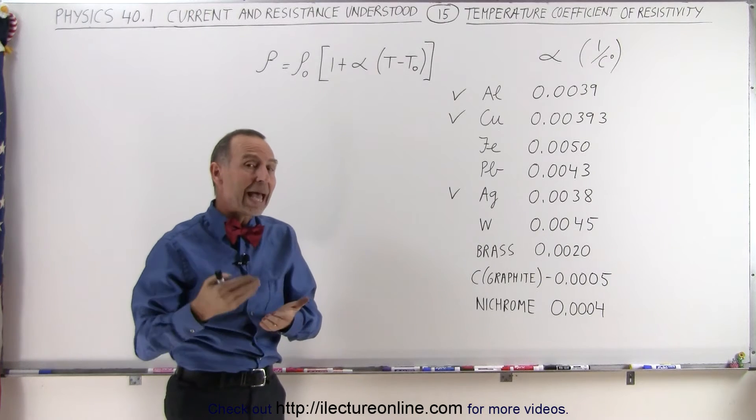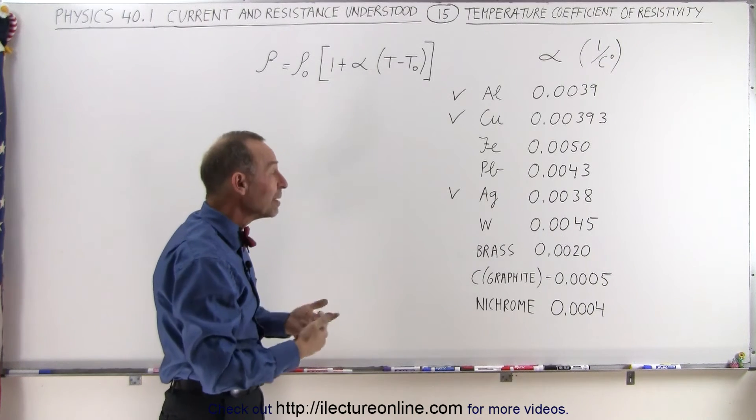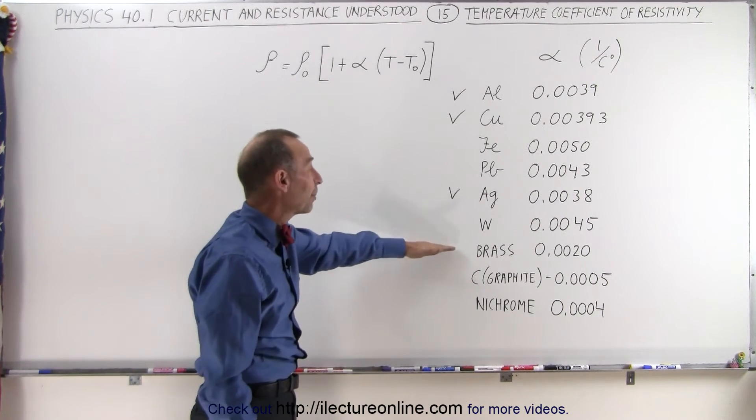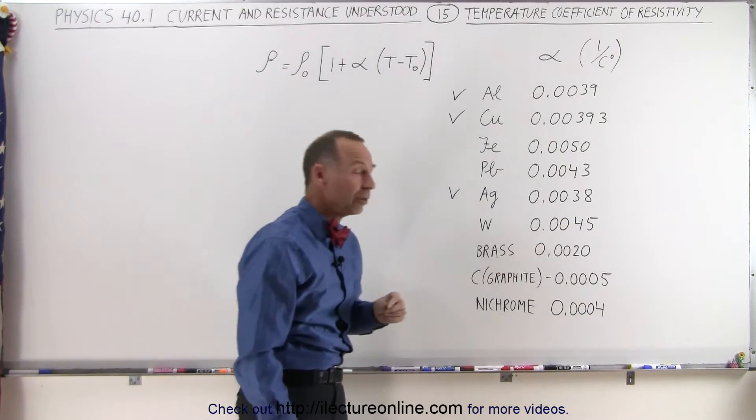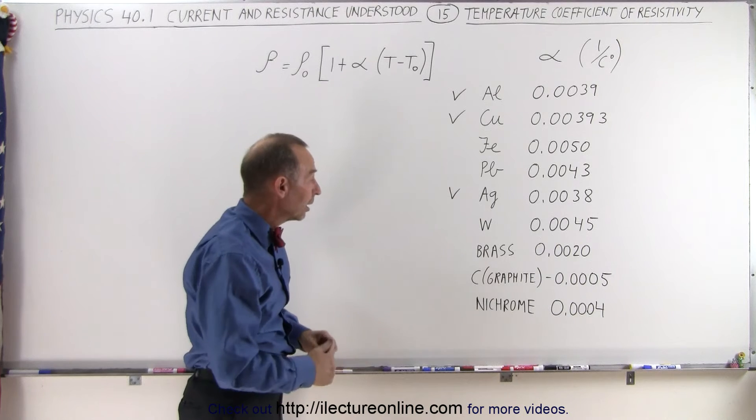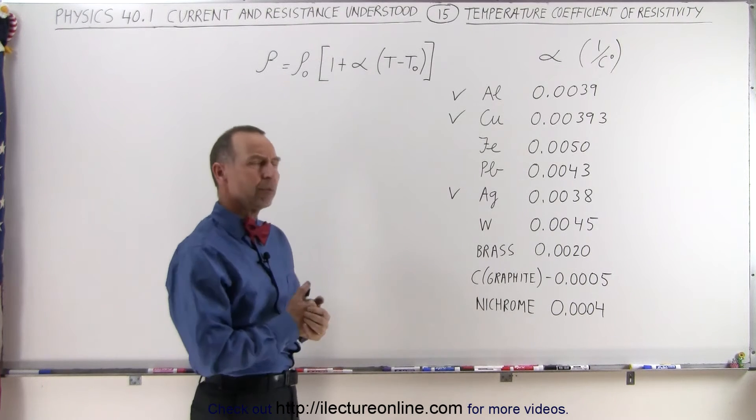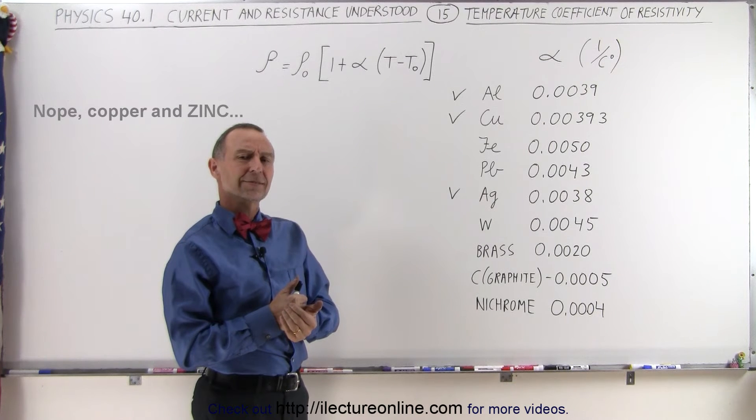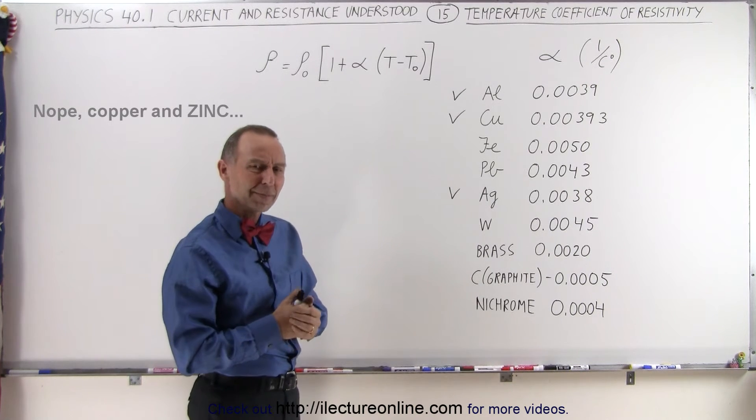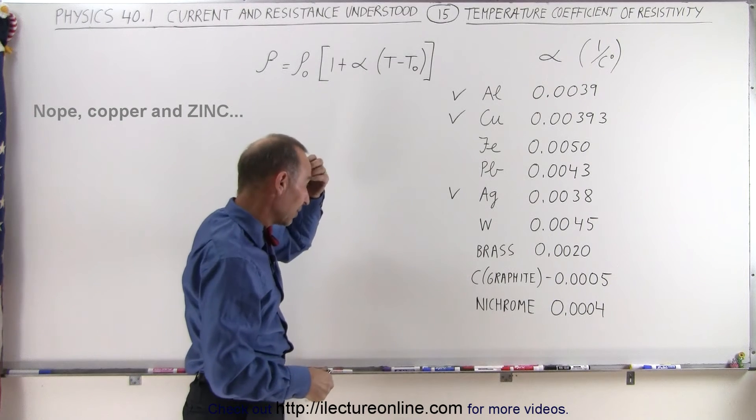But then when we start looking at alloys and other substances, things can be very different. For brass, for example, it's quite different—it's about half of what you would expect for normal metal just by alloying. Brass is made out of copper and nickel, I believe, right? I'm not sure, but anyway I'll skip that.